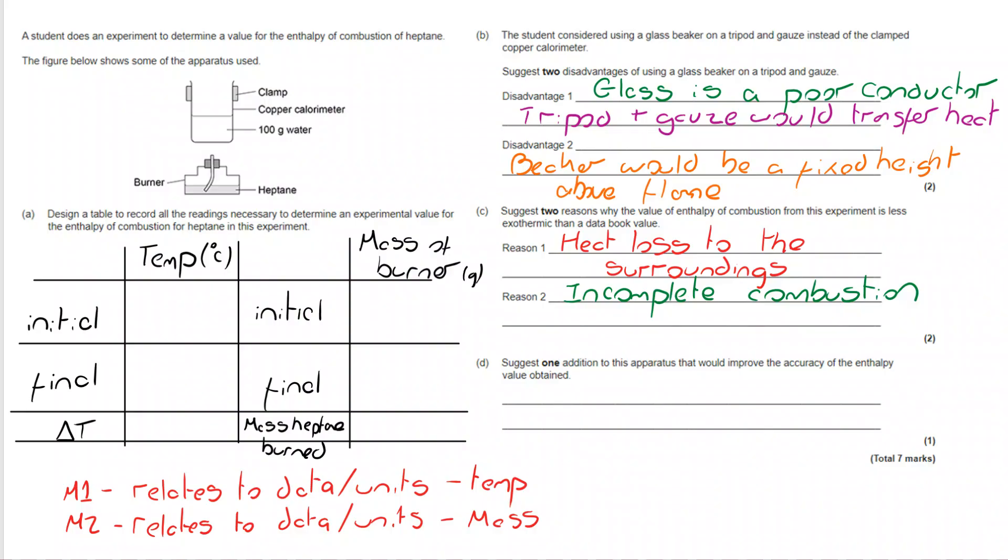And part D: suggest one addition to this apparatus that would improve the accuracy of the enthalpy value obtained. There are a couple of different ways of doing it, but they both relate to heat loss. You could put a lid on this or you could insulate your calorimeter - wrap it in polystyrene or something that's going to prevent heat loss from as many directions as possible.